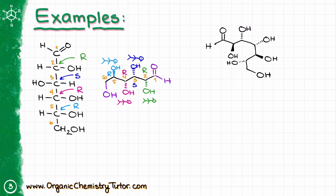We can use all the same steps to go back from bond line structures to the Fischer projection. Let's say we have this larger molecule and we need to convert it into a Fischer projection. Don't get intimidated by how big this molecule is — let's go through all the steps and see how easy it can be to convert it backwards. Step number one: I'm going to number my atoms, and I have one, two, three, four, five, six, seven carbons in this case.